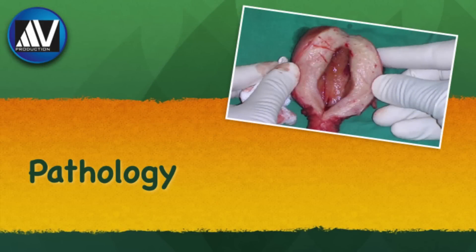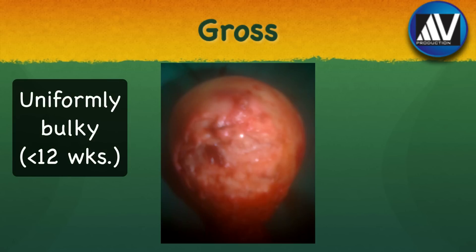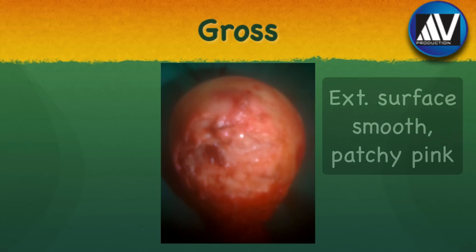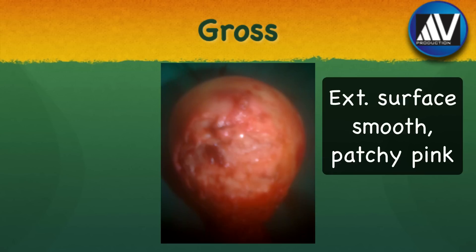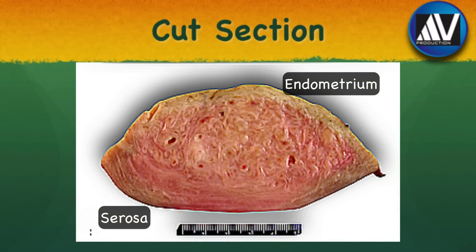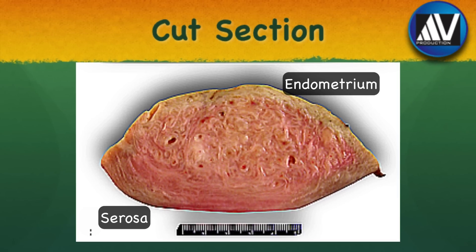In the next few slides, I will discuss the pathology of adenomyosis. On gross examination, the uterus is uniformly and sometimes asymmetrically enlarged, globular, but it rarely exceeds 12 weeks in size. It is heavy, weighing on average 125 grams. The external surface is smooth, regular, and has a patchy pink color suggesting hyperemia or congestion. On cut section, the myometrium shows diffuse hypertrophy. The posterior wall may be thicker than the anterior wall. It has a characteristic trabecular or granular appearance. Some cut sections may show small dark cystic spaces containing fluid or old blood, giving a characteristic burnt mastic appearance, seen only if the section passes through the ectopic endometrial glands.